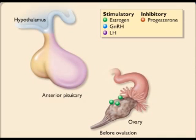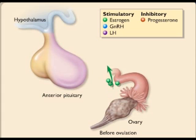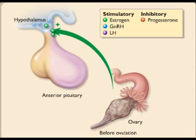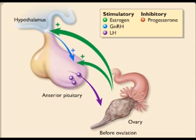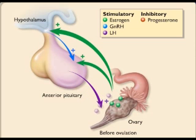During the menstrual cycle, before ovulation, small amounts of estrogen are secreted from the ovary. Estrogen stimulates the release of gonadotropin-releasing hormone from the hypothalamus and luteinizing hormone from the anterior pituitary. Gonadotropin-releasing hormone also stimulates release of luteinizing hormone from the anterior pituitary. Luteinizing hormone, in turn, causes release of additional estrogen from the ovary.